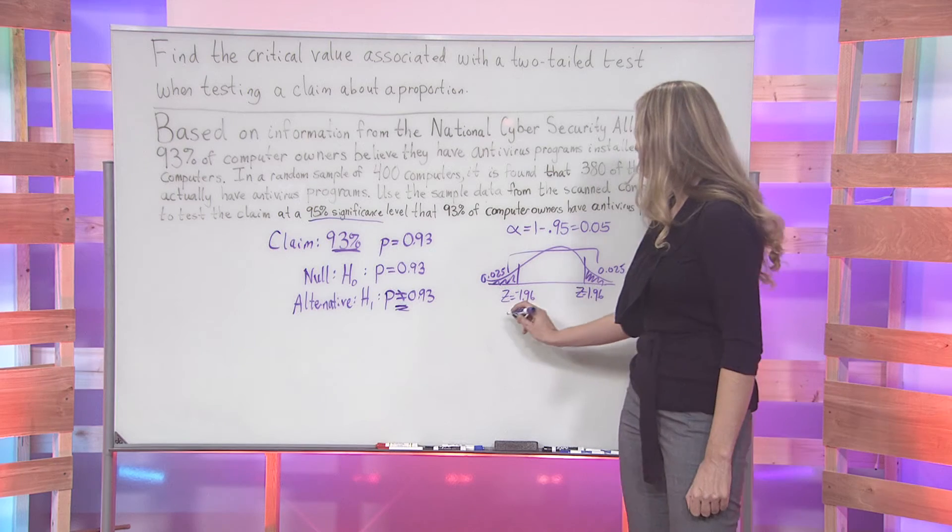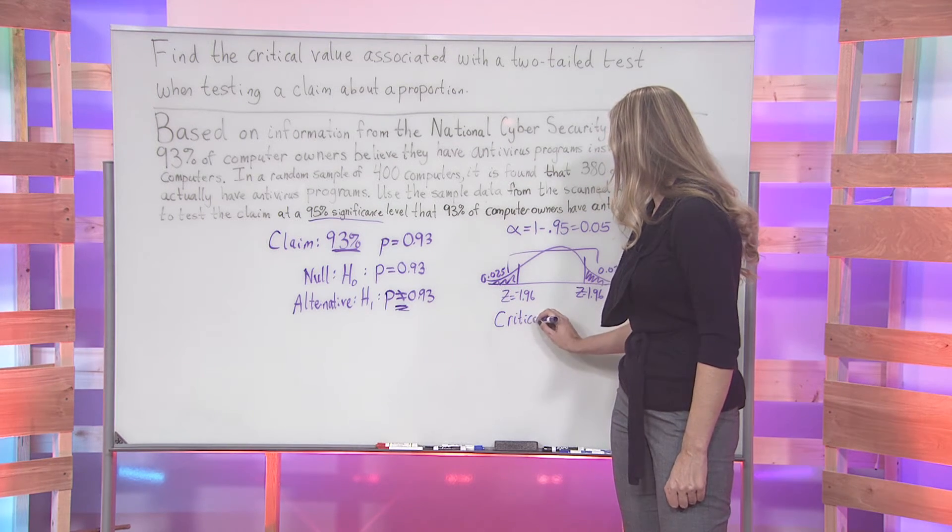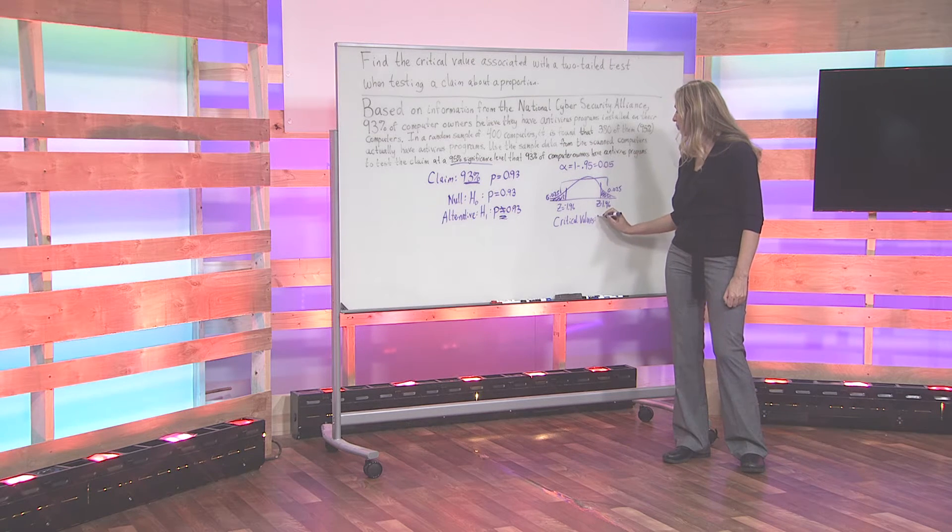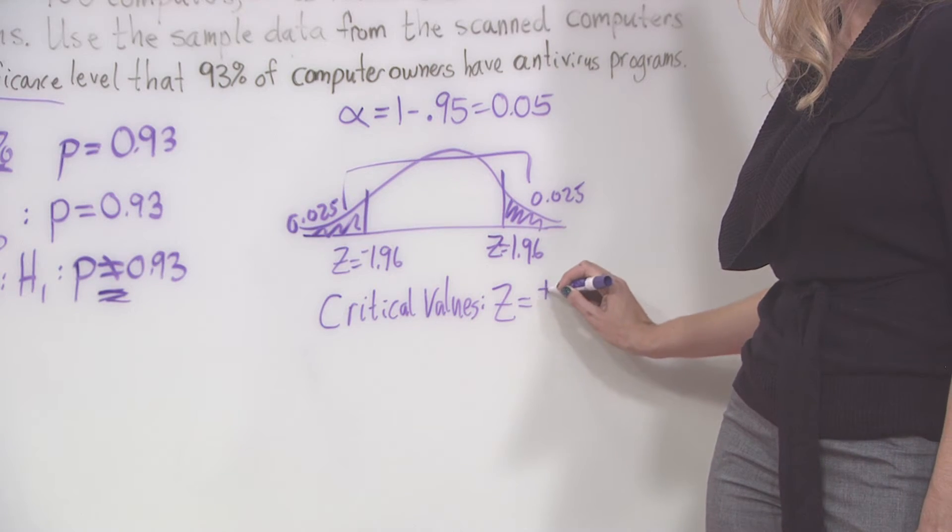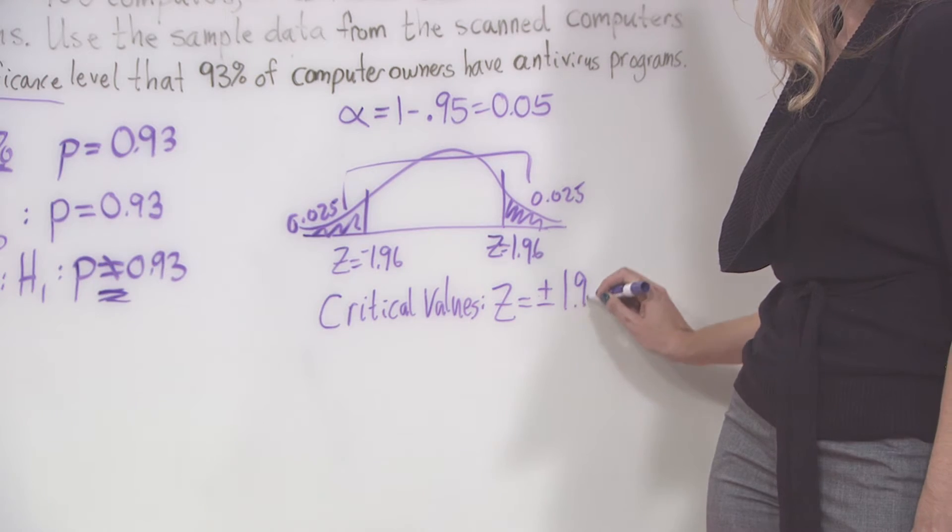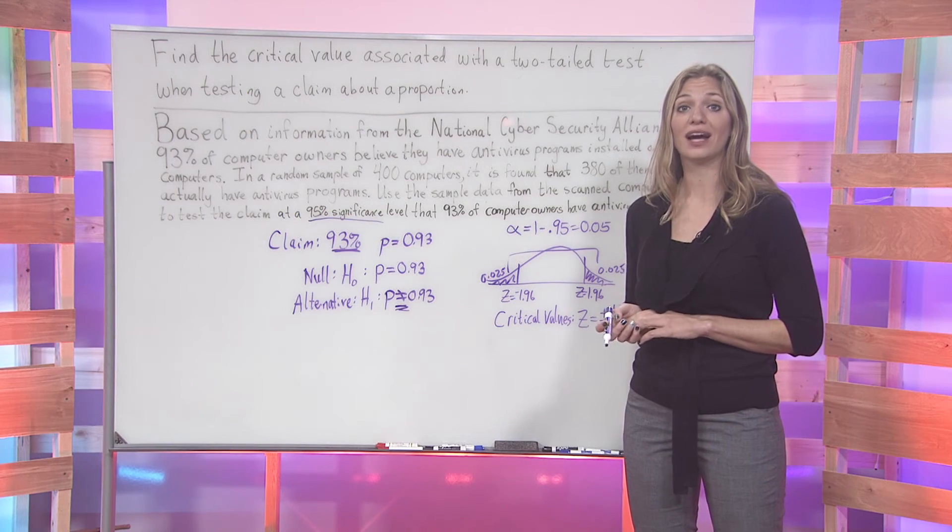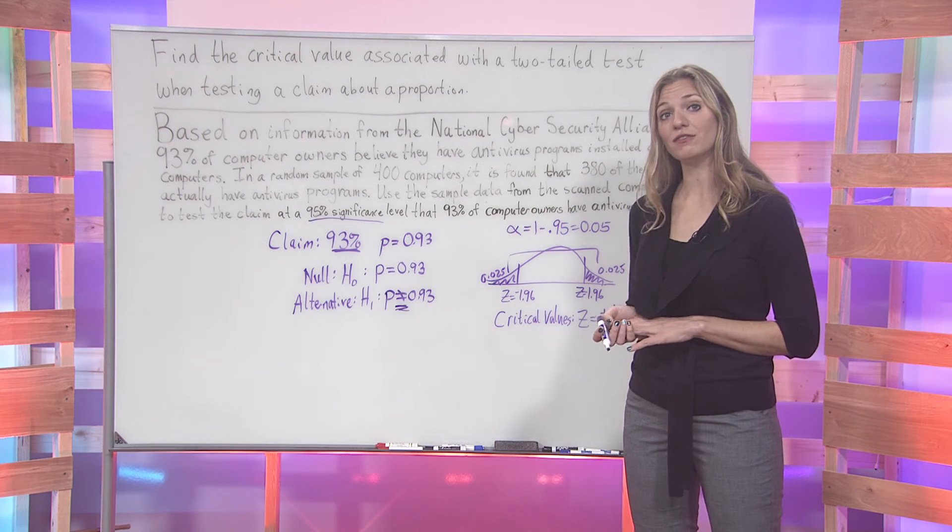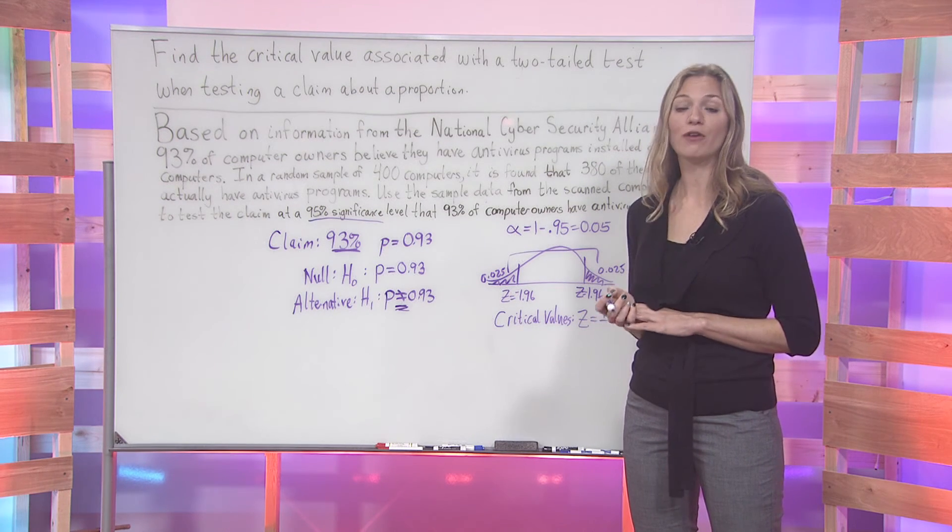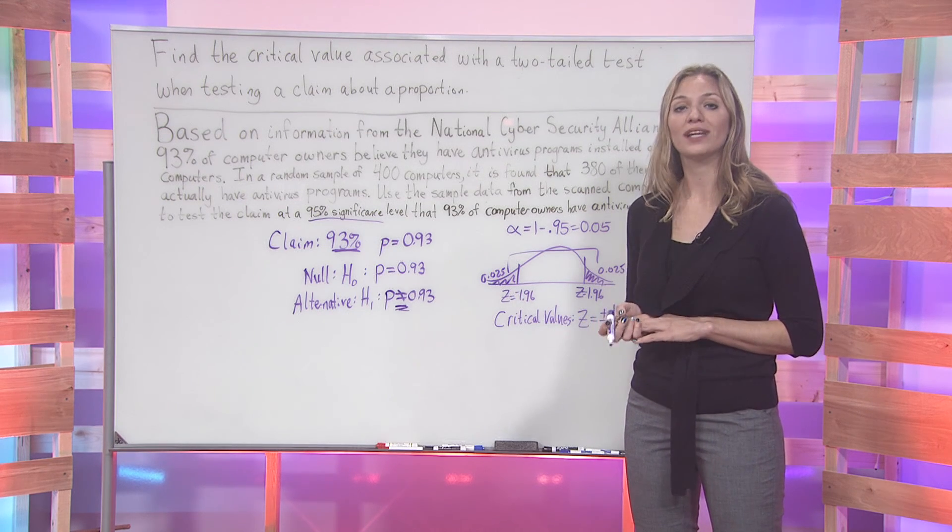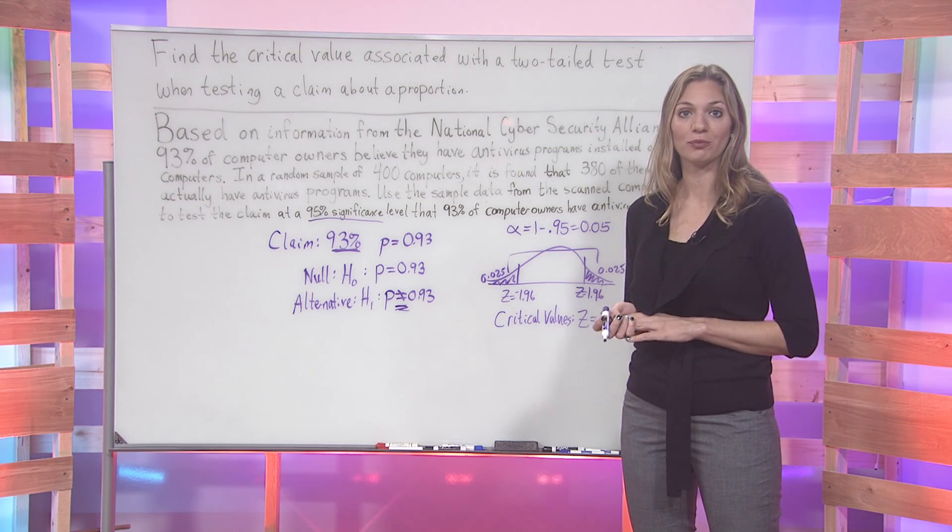Thus, our critical values coming either from the table or from your calculator will be Z = ±1.96. And this will be true for our 95% level of significance at which we are testing. So we have now found our critical values for our two-tailed test when given a claim about a population proportion.